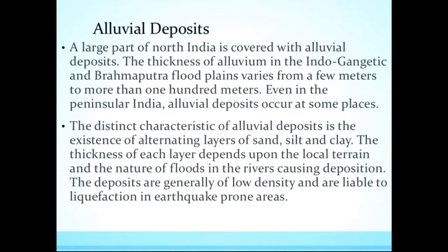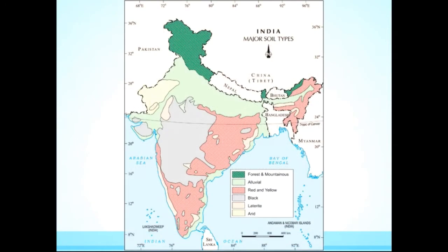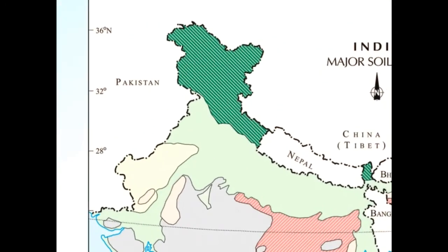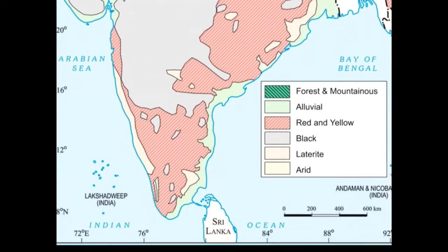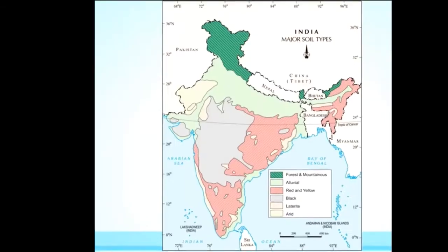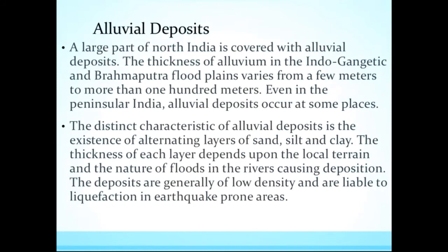Even in Peninsular India, alluvial deposits occur at some places. On the diagram, the alluvial deposits in North India are shown in light green. A distinct character of alluvial deposits is that there are alternating layers of sand, silt and clay.